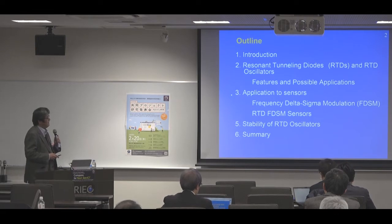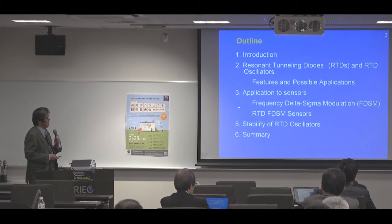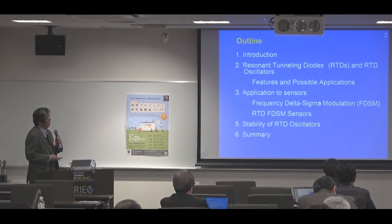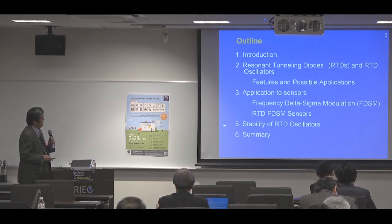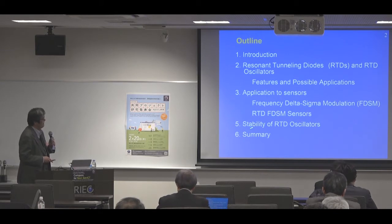Next I'll talk about the application of RTD oscillators to sensors, where we employ the frequency delta-sigma modulation technique, which is based on frequency modulation signal. Here I'll talk about two types of RTD-FDSM sensors we study. Then I'll talk about some problems in RTD oscillators such as stability, and I'll summarize my talk.